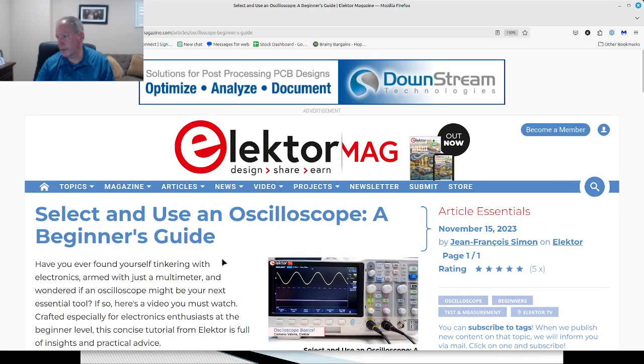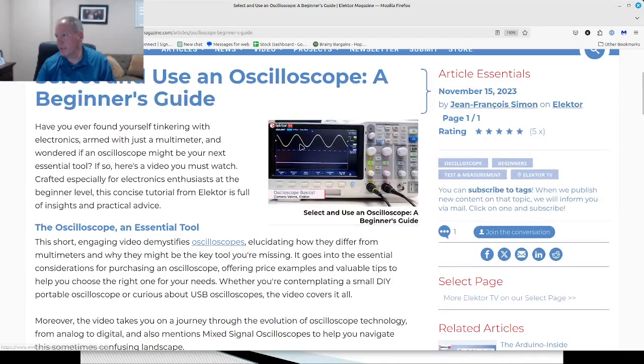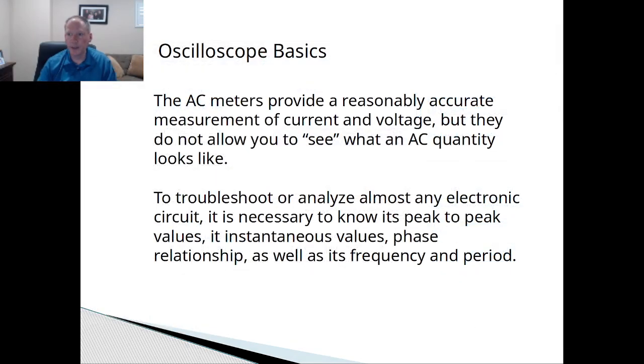And the scope here is measuring AC, right? And you can see the sine wave. So unlike a meter that shows the value in RMS, AC provides a measurement of the current and voltage, but they allow you to see it.